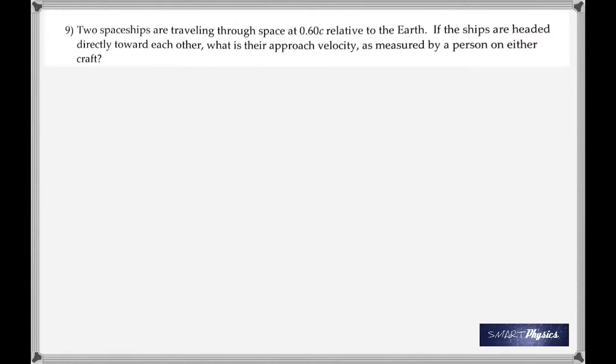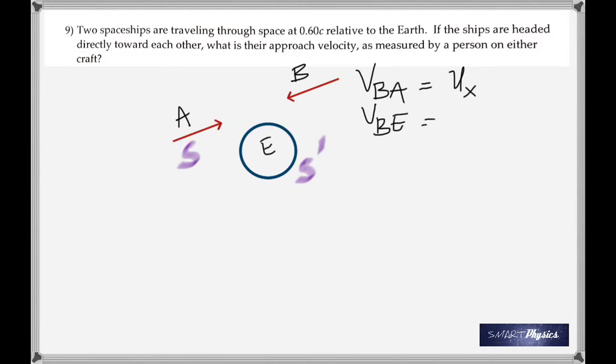Two spaceships are traveling through space, both at 0.6c relative to the earth. If the ships are headed directly toward each other, what's their approach velocity as measured by a person on either craft? So that's the picture. Velocity of b with respect to a is ux. Velocity of b with respect to the earth is ux prime. Velocity of the earth with respect to a is v.